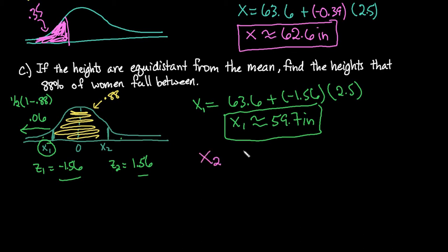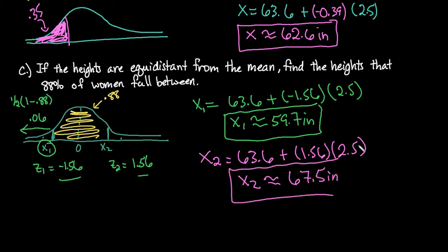My second one I'm going to do the same process, 63.6, but this time I'm going to use the positive z-score and then multiply it by 2.5 and when I plug that into my calculator I end up with approximately 67.5 inches. So approximately 88 percent of women in this population fall between 59.7 inches and 67.5 inches.